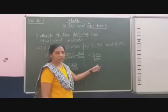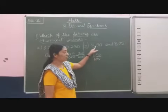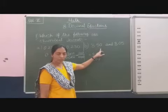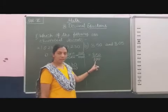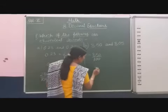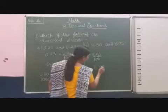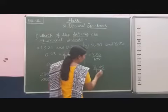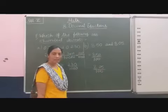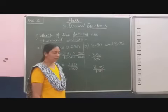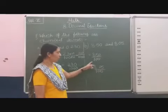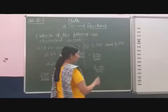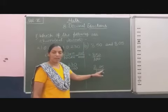I put 850 because after the decimal point two places are given — tens and hundredths — so I will take 100 as the denominator. For 8.05, if I remove this decimal point, in the fraction I can write it as 805 by 100. So both have 100 as the denominator. But now compare 850 and 805.